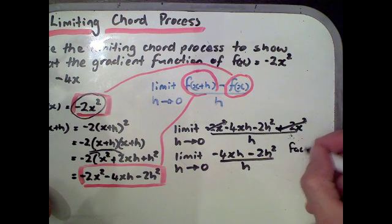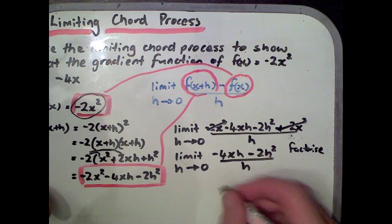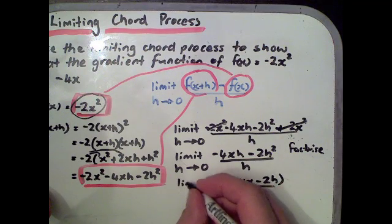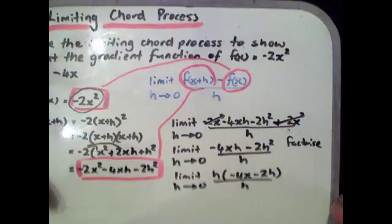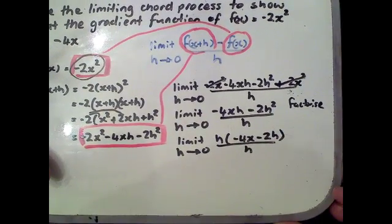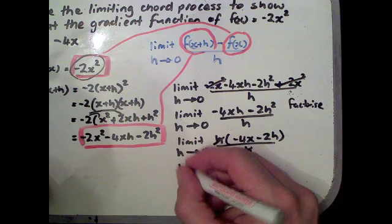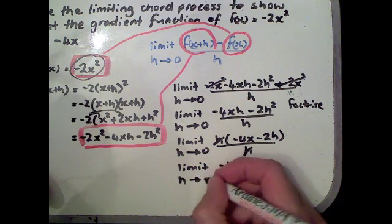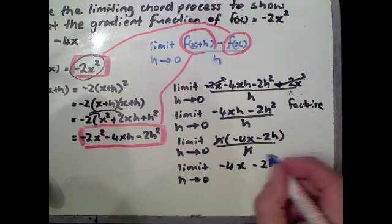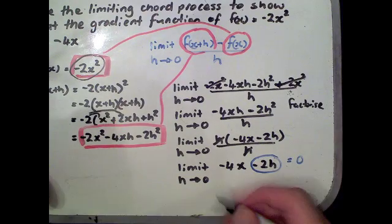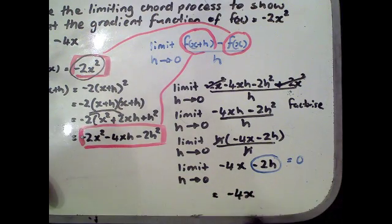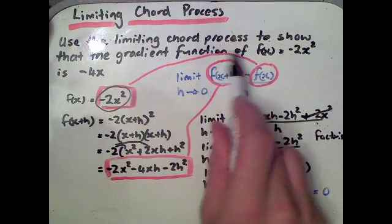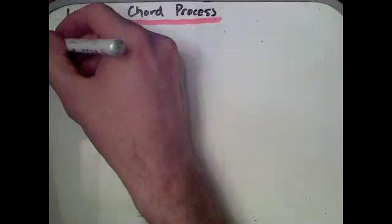We can't divide by 0, so we factorize the numerator to get h times negative 4x minus 2h, then cancel the h's, leaving negative 4x minus 2h. As h goes towards 0, the minus 2h term disappears, and we're left with negative 4x. Going back to our question, we've shown that the gradient function of f of x equals negative 2x squared is negative 4x.